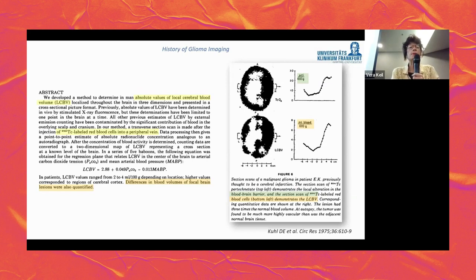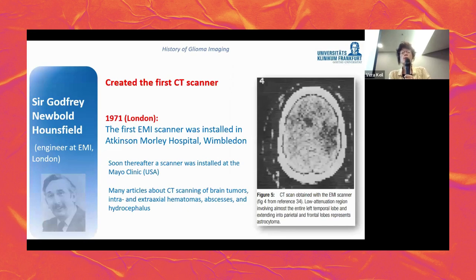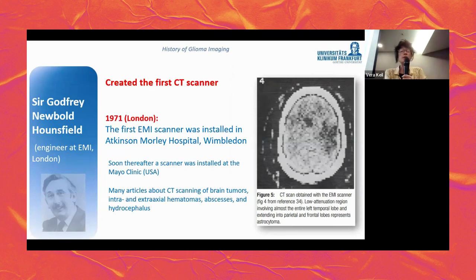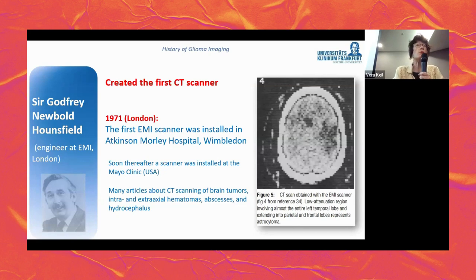They were the first to demonstrate that high-grade gliomas have increased cerebral blood volume and damage to the blood-brain barrier. Hounsfield was the father of the first CT scanner — then called the '3D X-ray machine' — which employed a pencil X-ray beam with a single photomultiplier detector and operated on a translate-rotate principle. The first images from these scans took more than two hours to reconstruct by a computer outside the scanner.